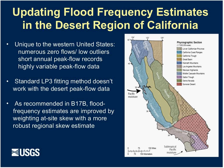Unfortunately, I spent the majority of my time updating flood frequency for the desert region of California. There have been two previous studies that have tried to pin down at-site flood frequency estimates as well as regional prediction equations for ungauged sites in this notoriously challenging area. This challenge is not unique to California — throughout the western United States, we have numerous zero flows and low flows in desert regions.